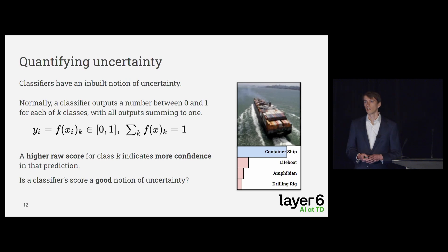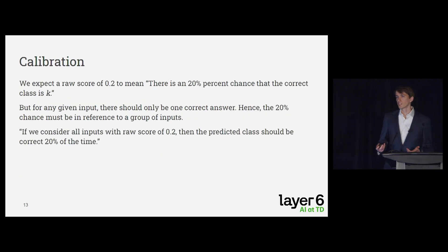Let's look at some methods that are used for doing so. So going back to classifiers, they have a very natural inbuilt notion of uncertainty. It's just the raw output of the model. So a classifier typically will output a number between 0 and 1 for each of the k classes that we're looking at. And so I'll denote the classifier as the function f acting on input data x and giving some output y. A higher raw score output from the model for class k indicates that the model is more confident in some sense about that prediction. Now, this is a heuristic notion of confidence or quantifying uncertainty, but the question is whether that score alone is a good notion of uncertainty.